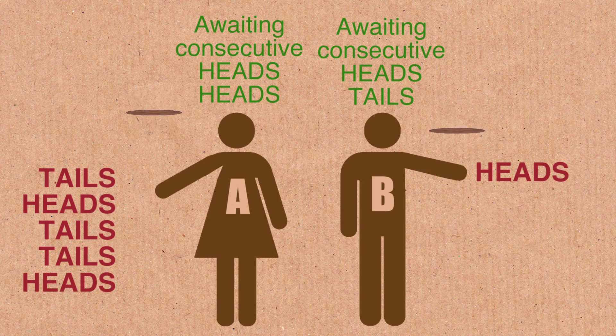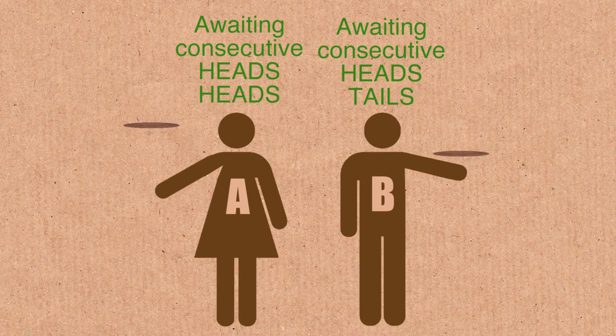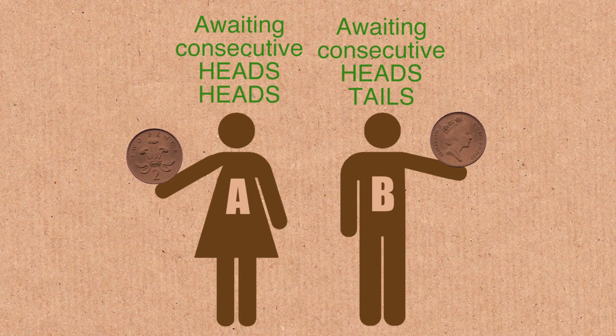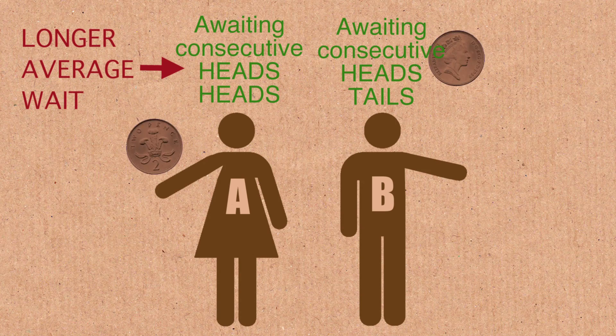What's the probability that you're going to get heads heads? Even Brady would probably know this. It's one in four. And heads tails — it's the same, one in four. Even though they have equal probability, I claim your average waiting time for heads heads is going to be longer than for heads tails.